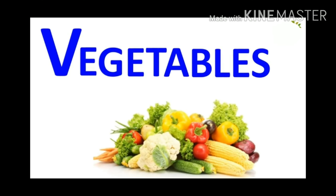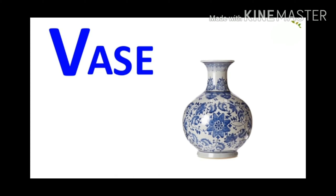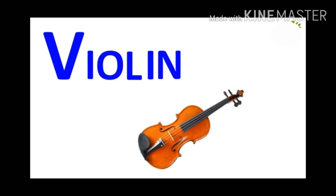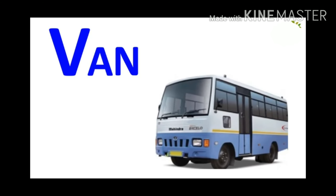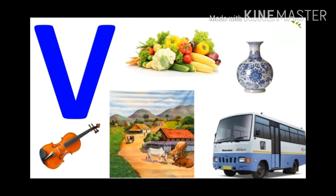After U, letter V. This is the letter V. V for Vegetables. V for Vase. V for Violin. V for Village. V for Van. Letter V has the sound V.